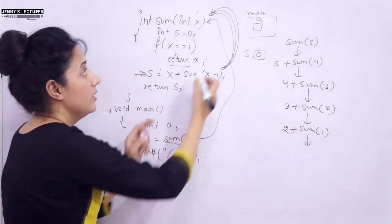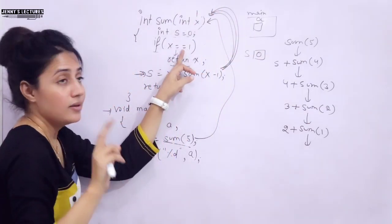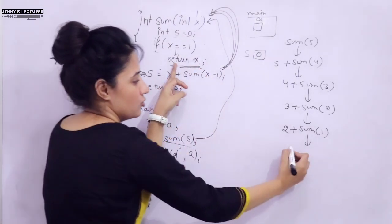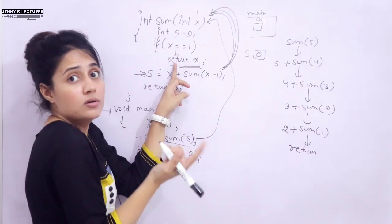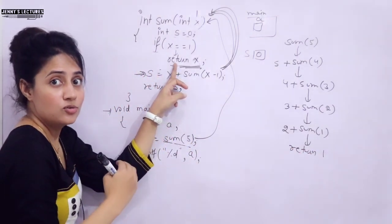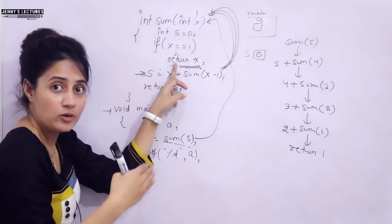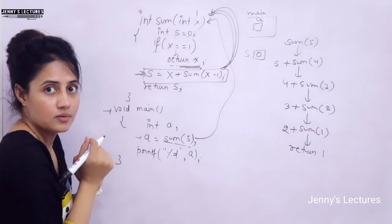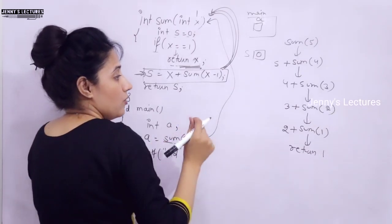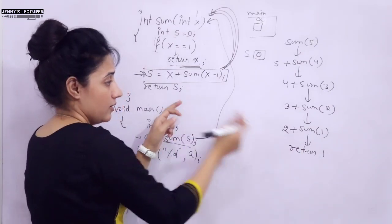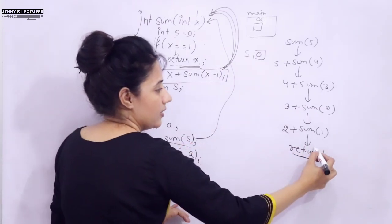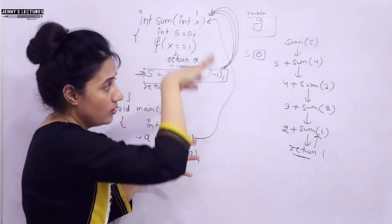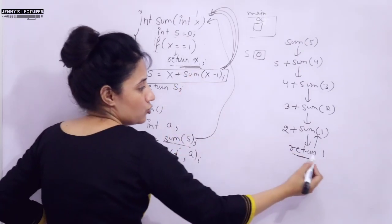This time x is 1, so we check: x == 1 — yes, the condition is true. So the statement that executes is return x. x value is 1, so we return 1. Control goes back to where we called from — which is the statement containing sum(1). We go backward in the same flow.